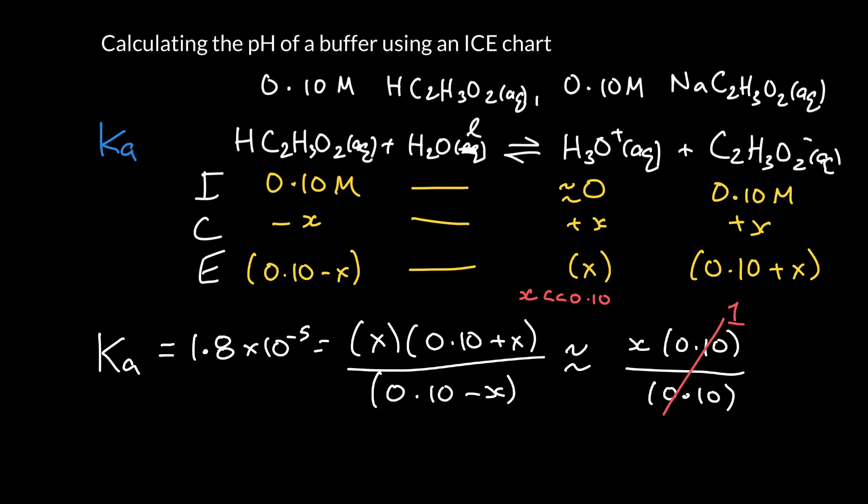So you might remember seeing something like this in the polyprotic acid video. So immediately we get the value of x, and that is equal to the concentration of hydronium. And we want to find the pH.